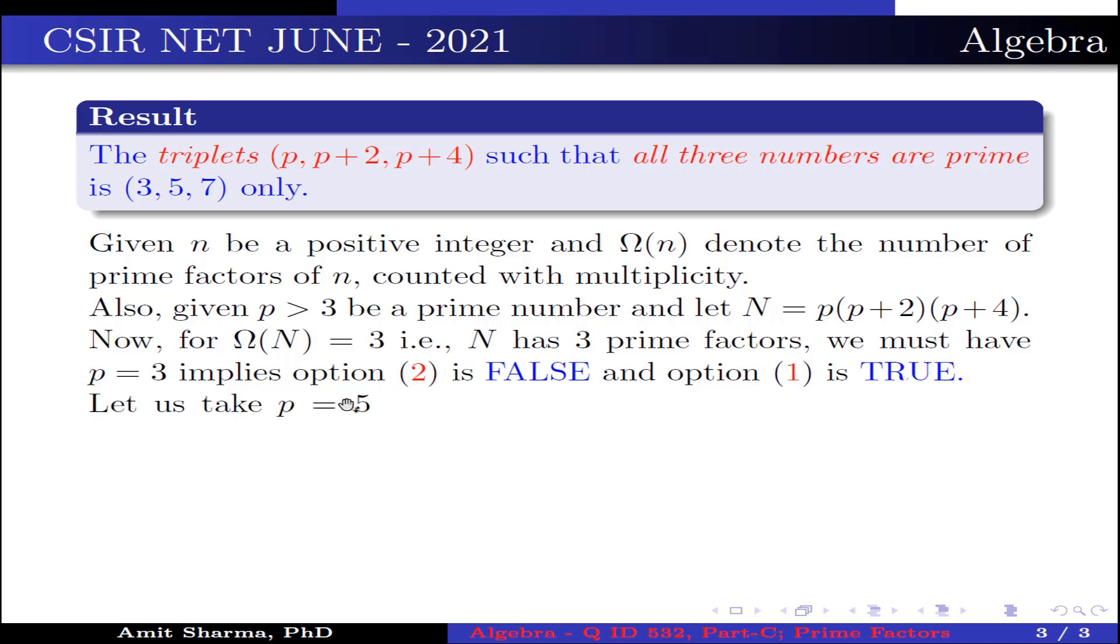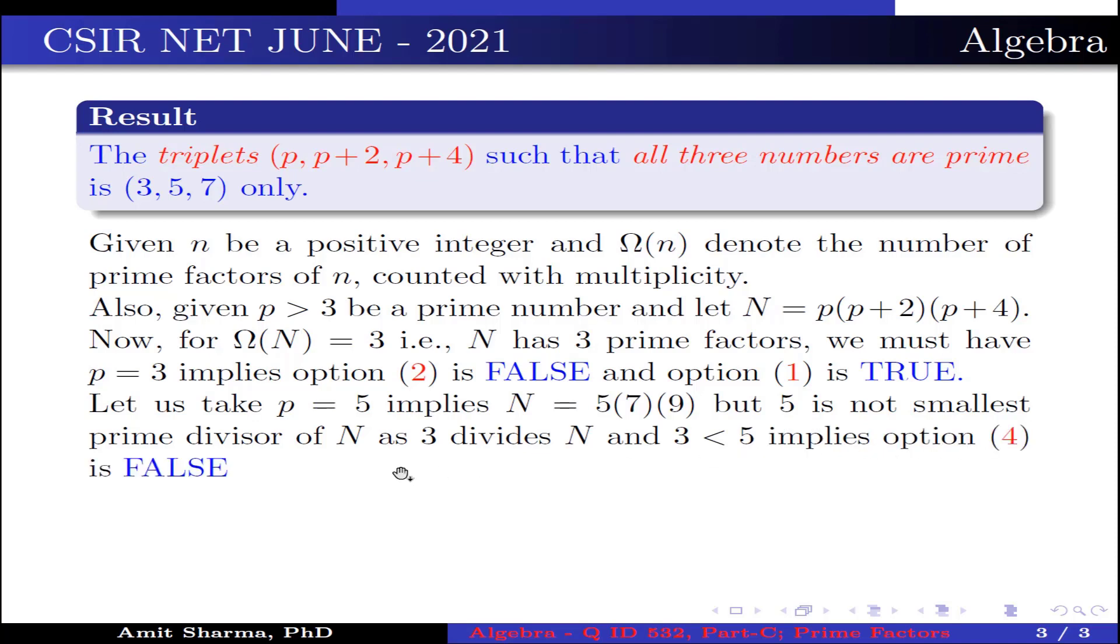Now, let us take p = 5. This implies N = 5(7)(9). But 5 is not the smallest prime divisor of N, as 3 divides N and 3 < 5. This implies option 4 is false and option 3 is true.